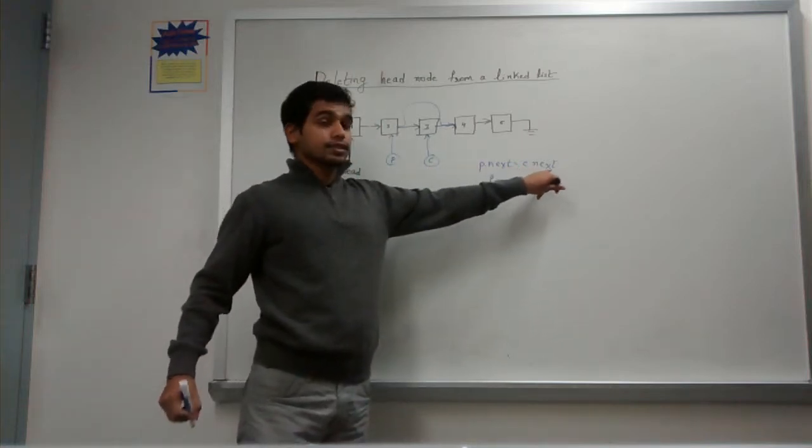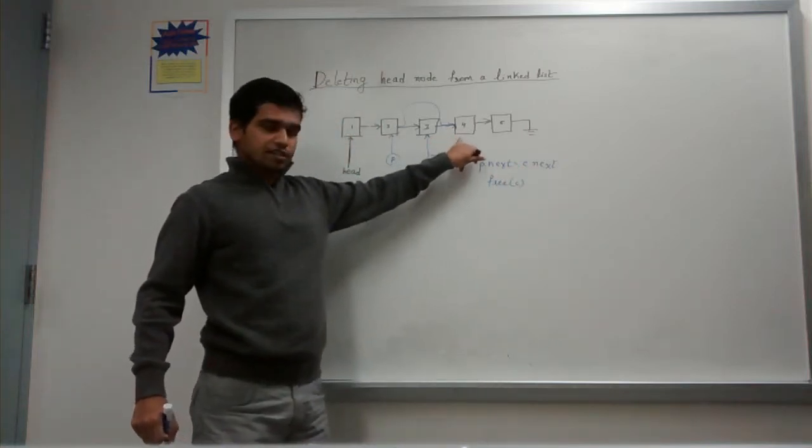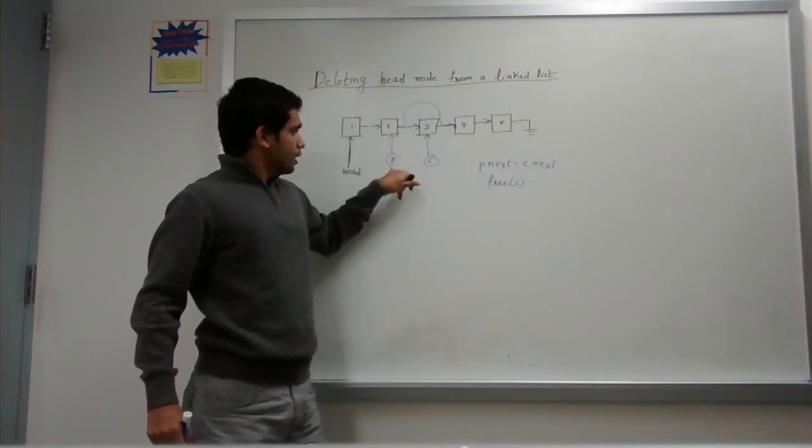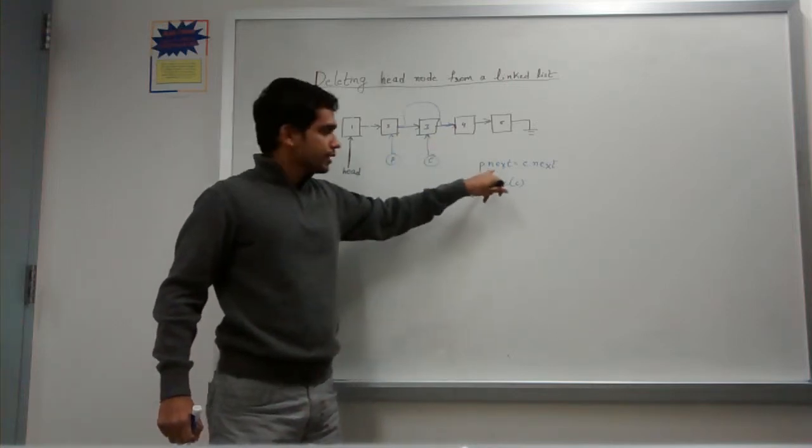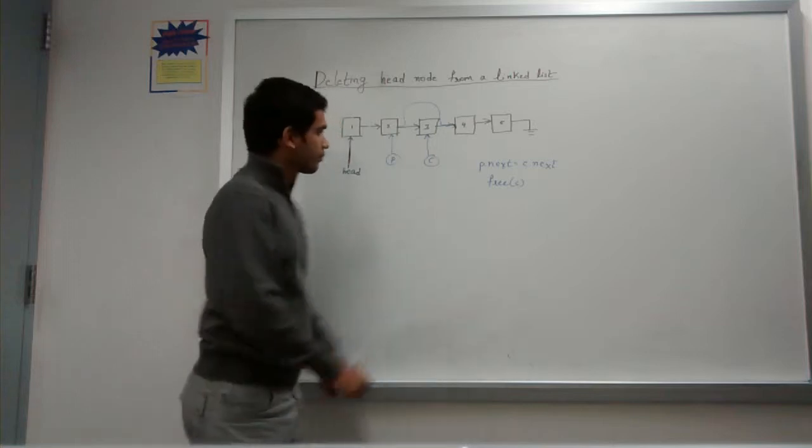Why do you need c? To get c.next because that is the only reference to 4 and why do you need p? Because p is next is what you are going to assign and then you can free c. So that is done.